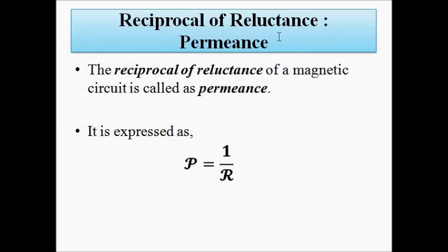The reciprocal of reluctance is called permeance. Just as in an electrical circuit the reciprocal of resistance is called conductance, similarly in a magnetic circuit the reciprocal of reluctance is called permeance.